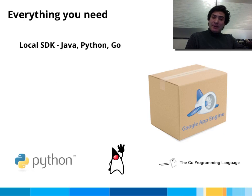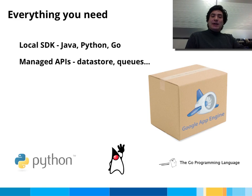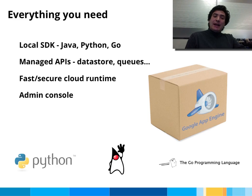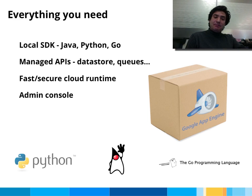We give you everything you need. We have a local SDK in Java, Python, Go. You can download it, install it on your machine, and get it up and running quickly. We have a series of powerful managed APIs for data persistence, queues, everything you need to get your app up and running. We also have our fast, secure cloud runtime. Once you get the app built locally, you can deploy it quickly, and we have the admin console where you can manage your application and make changes to it.